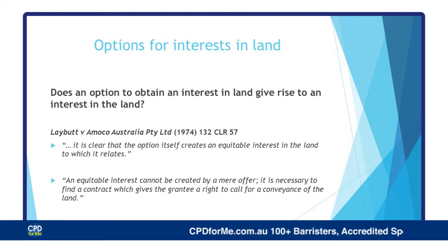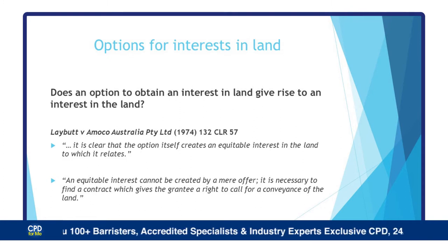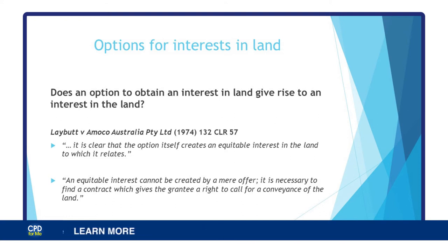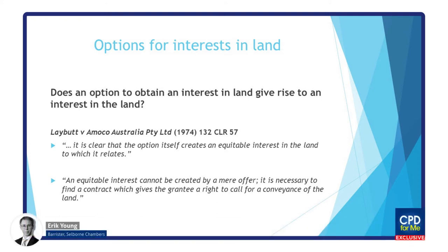It is the option itself that created that interest, and that interest could not be created by a mere offer. It was necessary to find a contract which gives a grantee a right to call for the conveyance of the land — and that was sufficient, meaning they could indeed have put a caveat on it. In that case, the option did not give the grantee the right to nominate a person to act as the agent, and the option and contract when read together provided for the payment of the deposit. At the end of the day, it was found that there was an interest in that land that was able to be relied upon by the grantee of that option.